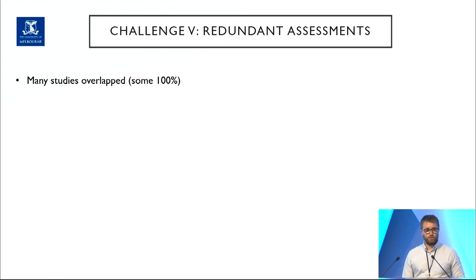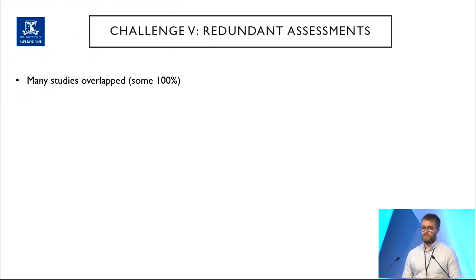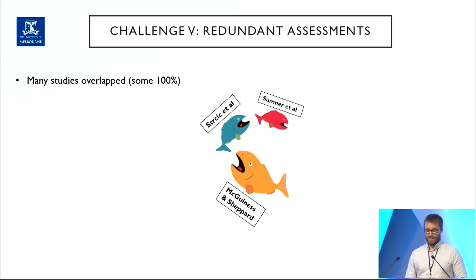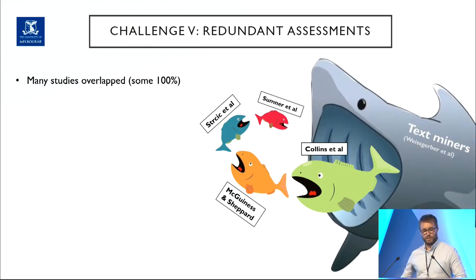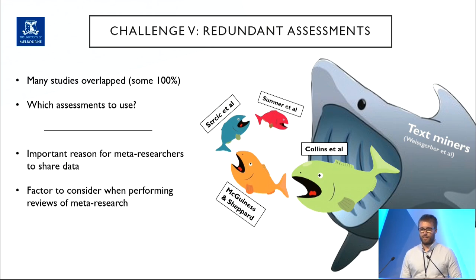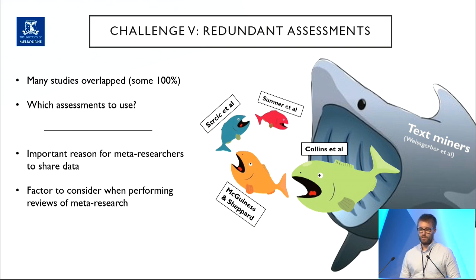The last challenge — probably the most interesting and the biggest surprise — is that of the 114 studies eligible for the review, many sampled the same articles, and some overlapped by 100%. For example, a preprint by Sumner et al. looked at COVID studies, and 100% of their studies were subsequently looked at by Stritch, then both were looked at by McGuinness and Shepard, then all of those by Collins, and then text miners came in and looked at everybody's studies. This raised an important question: if five meta-research studies are looking at the same article, whose assessment do we use or trust? It also underscores why meta-researchers should share their data, and why overlap is an important factor to consider when performing reviews of meta-research studies.